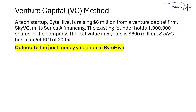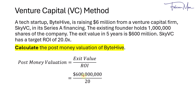Calculate the post-money valuation of ByteHive. The post-money valuation is equal to the exit value divided by the ROI. The exit value is $600 million and the ROI is 20 times, so $600 million divided by 20 equals $30 million. The post-money valuation represents the value of ByteHive after the funding is raised.